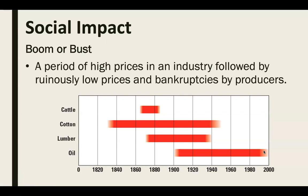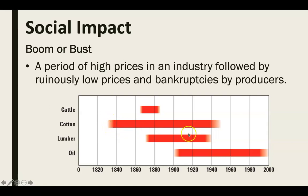Boom or bust is a period of high prices in an industry usually followed by ruinously low prices and bankruptcies. Looking at a chart, the cattle industry was huge from about the end of the Civil War, around 1865 to the mid-1880s. Cotton was a major industry from the early 1800s when people first moved to Texas all the way through the 1940s. Then with the oil industry, starting in 1901, the oil industry started in Texas and has just continued on through the years.